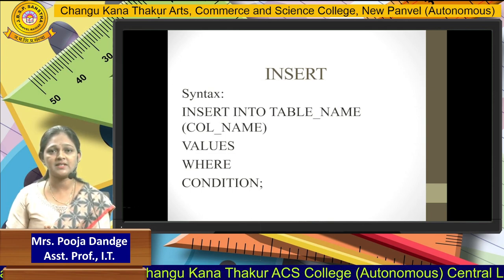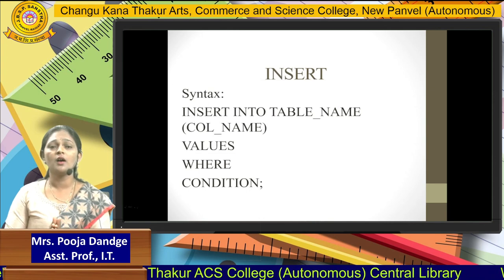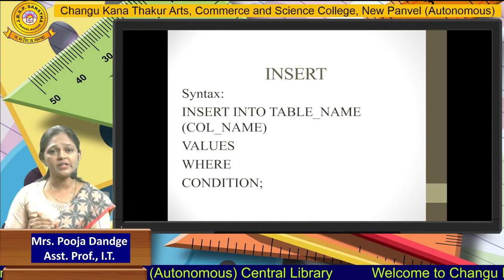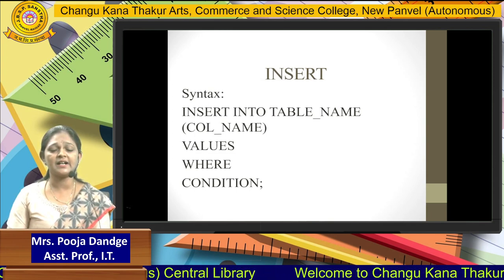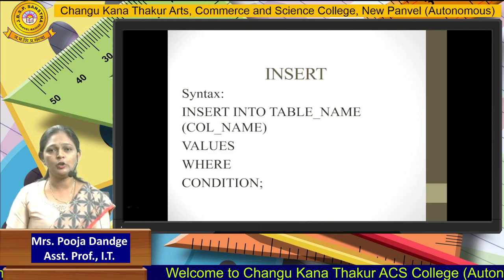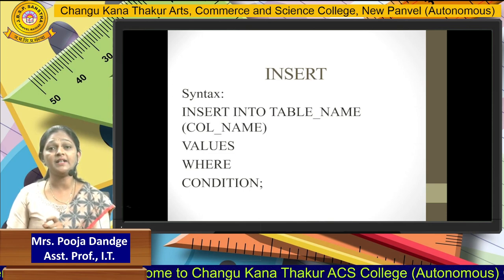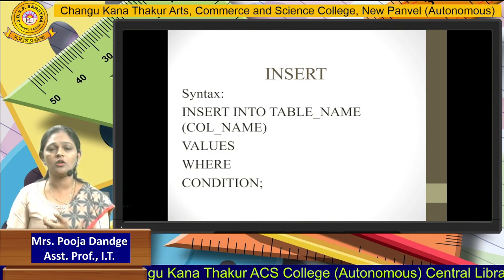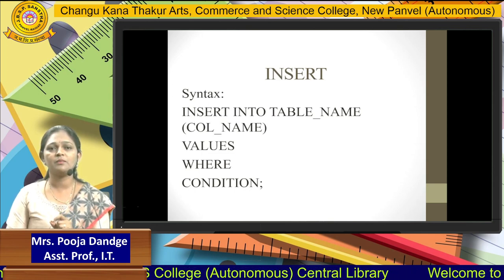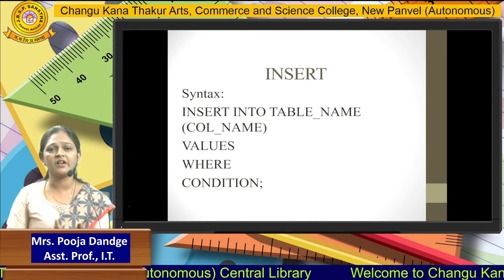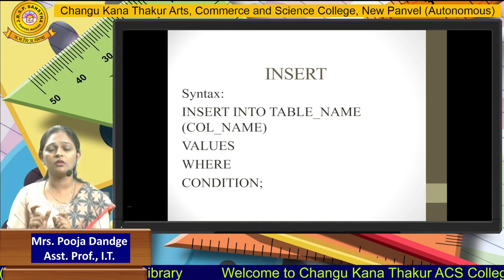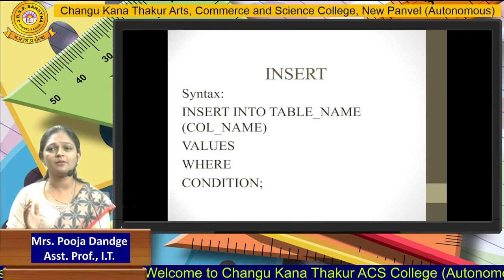Consider a student database with three columns: student_id, student_name, and student_class. To insert a record, we write: INSERT INTO student. The table name is 'student'. For student_id, which is a numeric value, we directly pass the number — for example, 1.